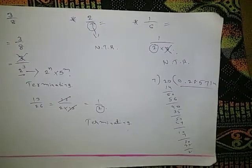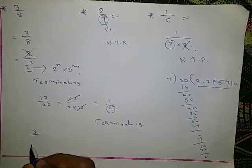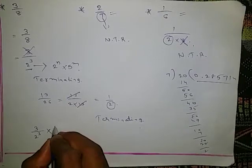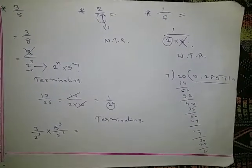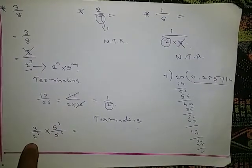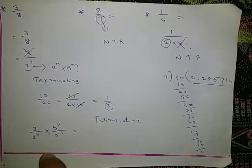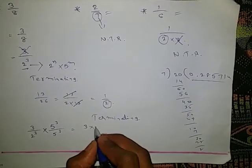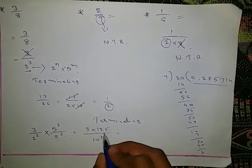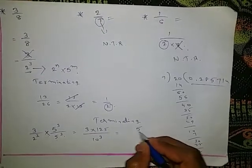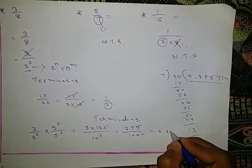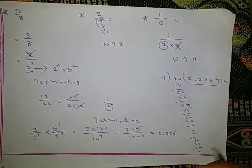What about 3/8? 3/8 can be written as 3/2³. Since there is 2³, we multiply and divide by 5³. We get (3 × 5³) / (2³ × 5³) = (3 × 125) / 10³ = 375 / 1000 = 0.375. So the terminating decimal for 3/8 is 0.375. This is one of the important questions.